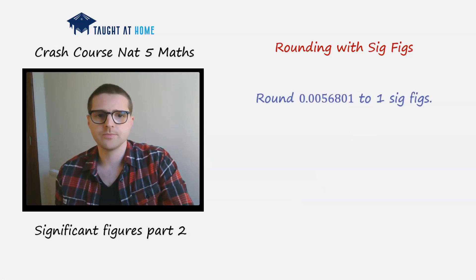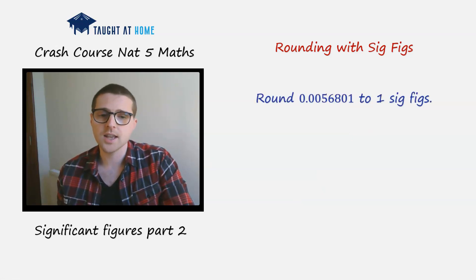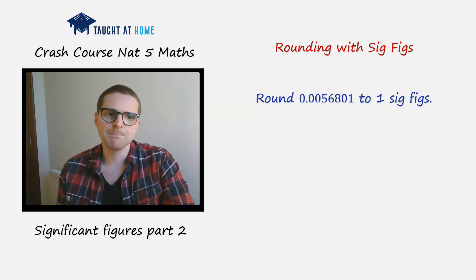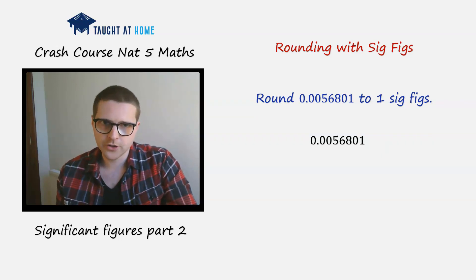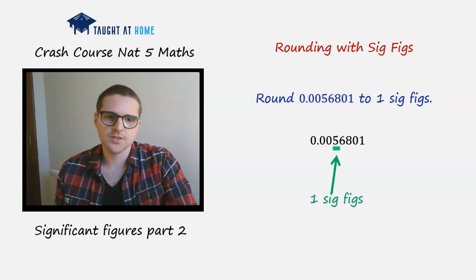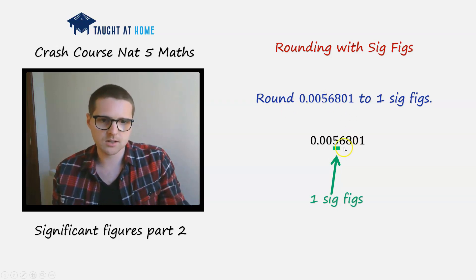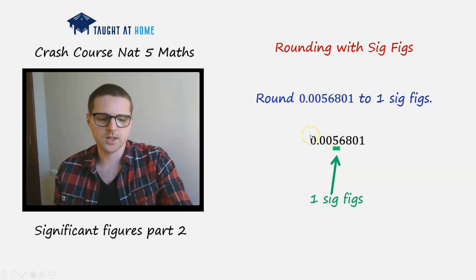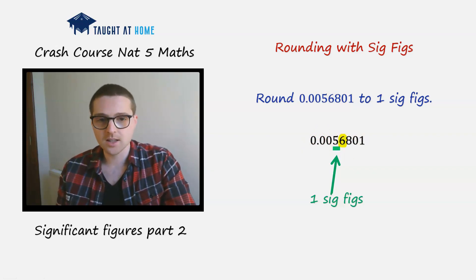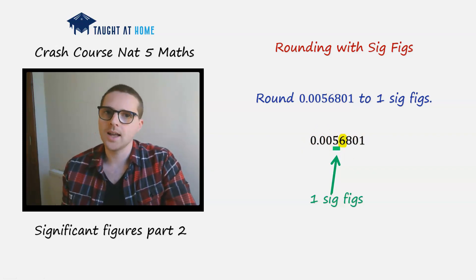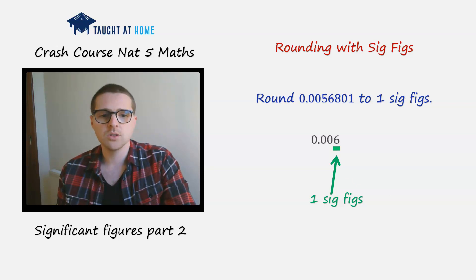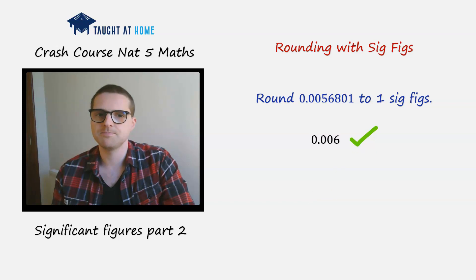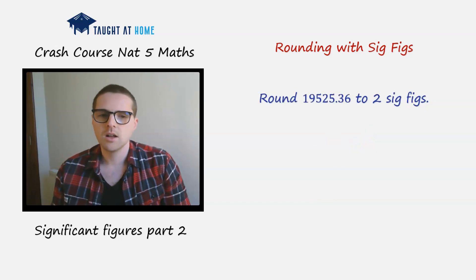Let's round 0.0056801 to one significant figure. I'm going to underline the first significant figure, which is the five, because remember these leading zeros just represent the position of the decimal point. I'm going to look at the second sig fig, which is six, and apply the rule — six is greater than five, so I'm going to round that five up to a six. The answer is 0.006.